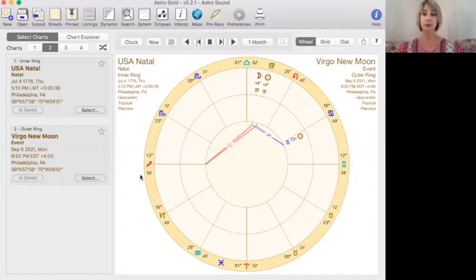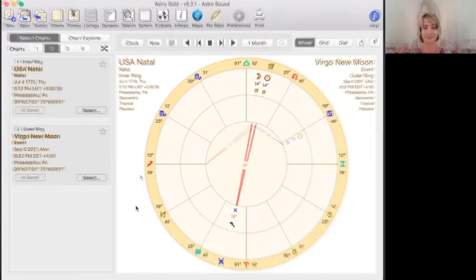And because this new moon is in the sign of Virgo, this also does pertain to health, health care, and how we are addressing these needs within our nation. What we're looking at here is the opposition that is formed from this Virgo new moon at 14 degrees to the United States Sedna at 15 degrees of Pisces.